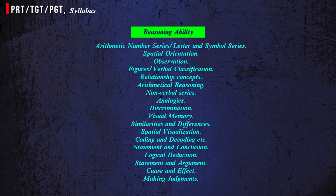In Reasoning Ability, you have to read: Arithmetic Number Series, Letter and Symbol Series, Spatial Orientation, Observation, Figures, Verbal Classification, Relationship Concepts, Arithmetical Reasoning, Non-Verbal Series, Analogies, Discrimination, Visual Memory, Similarities and Differences, Spatial Visualization, Coding and Decoding, Statement and Conclusion, Logical Deduction, Statement and Argument, Cause and Effect, and Making Judgments.